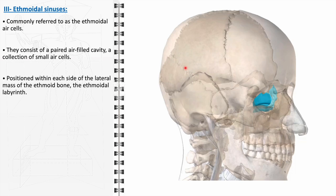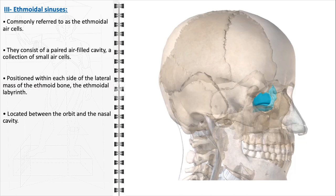Specifically, the ethmoidal sinuses are situated between two crucial anatomical structures: the orbit and the nasal cavity. This positioning is clinically significant, as diseases or pathologies affecting the ethmoidal sinuses can potentially impact the health and function of the eyes and the nasal passages. Their proximity to critical structures like the optic nerve and the brain, and their intricate anatomy, make surgical interventions in this area particularly delicate. Conditions such as ethmoid sinusitis or the presence of polyps in the ethmoidal air cells require careful management to avoid complications.